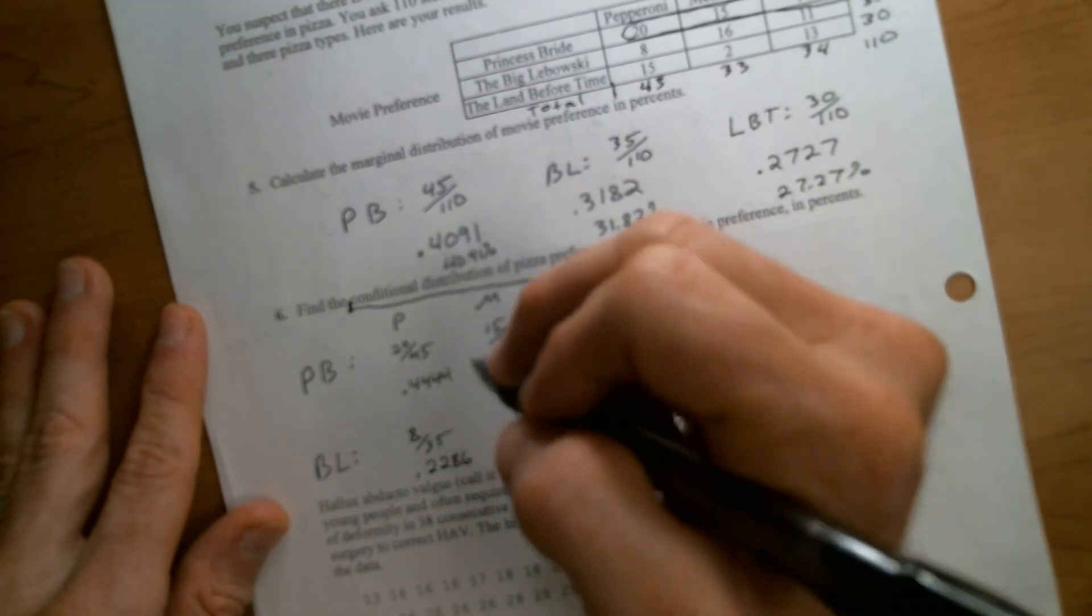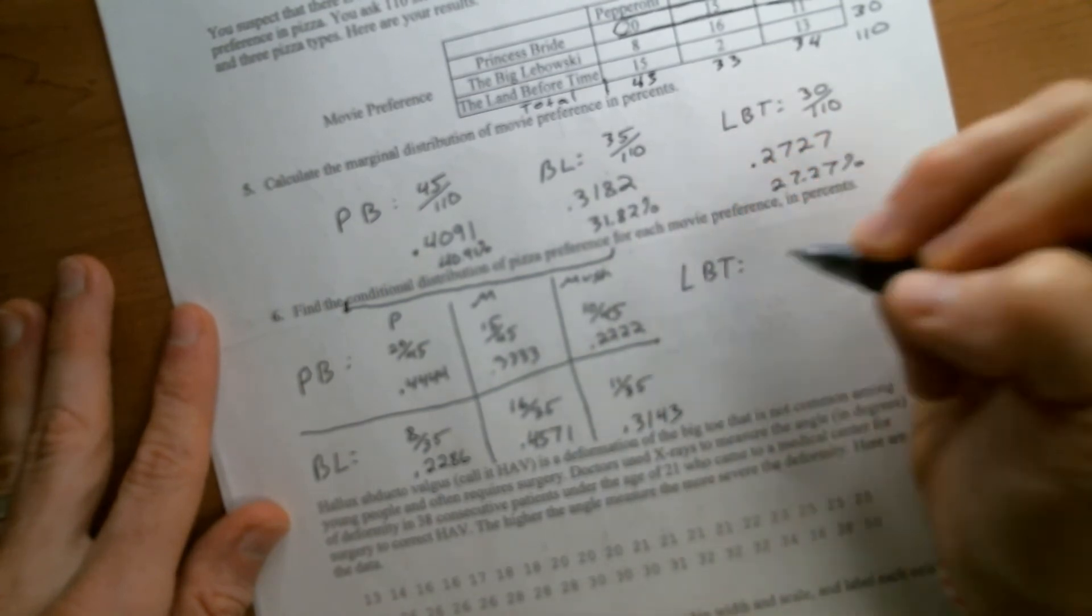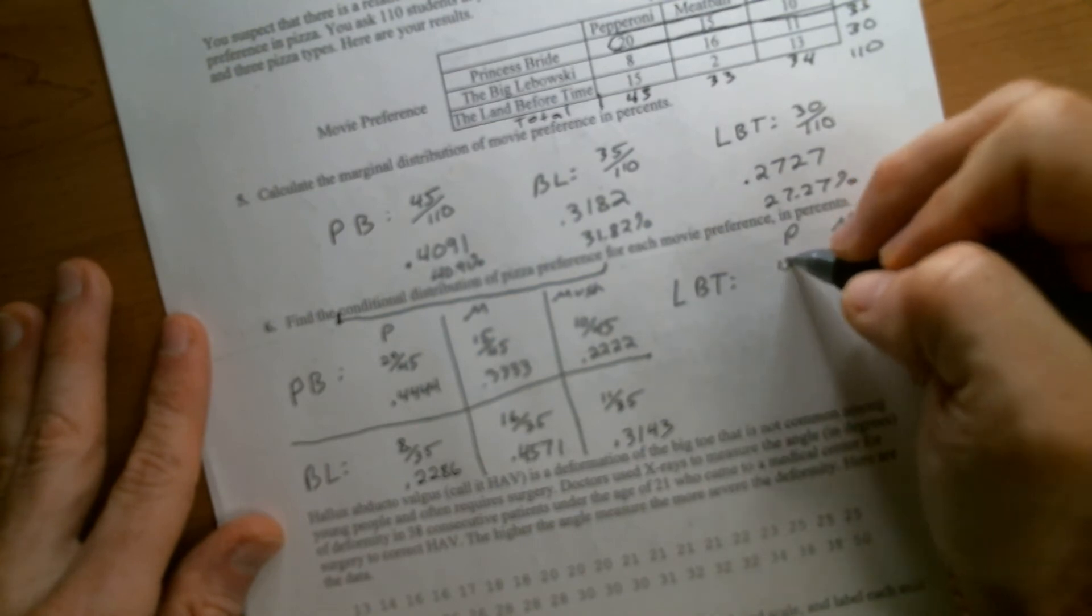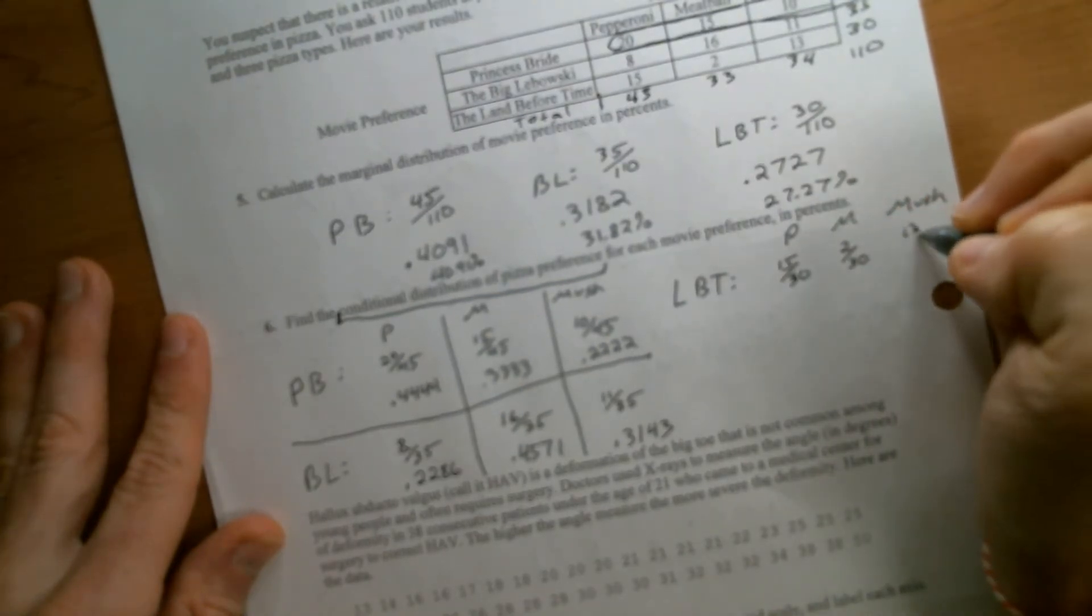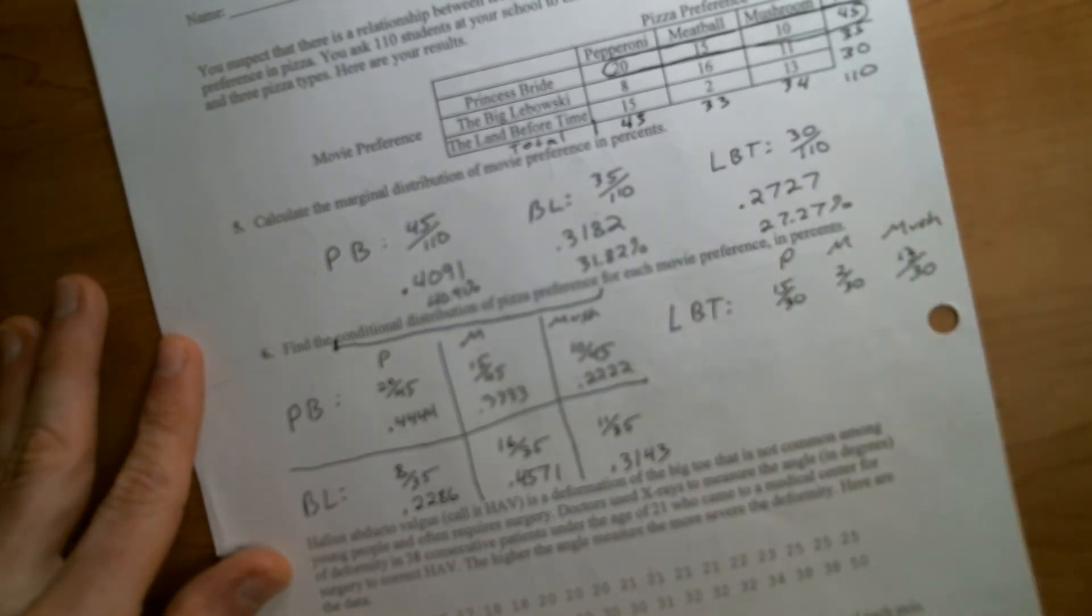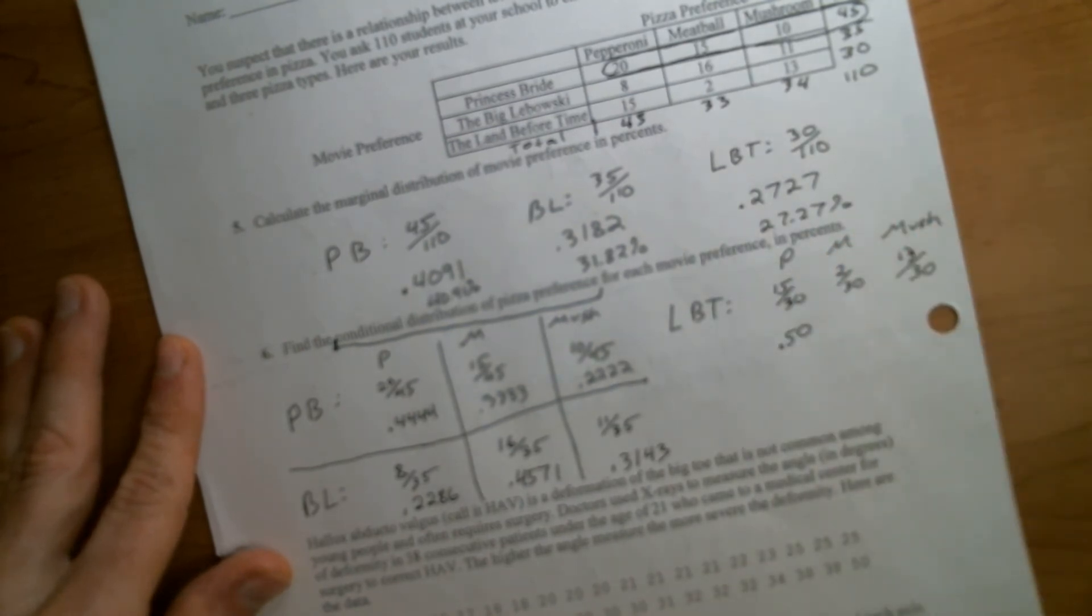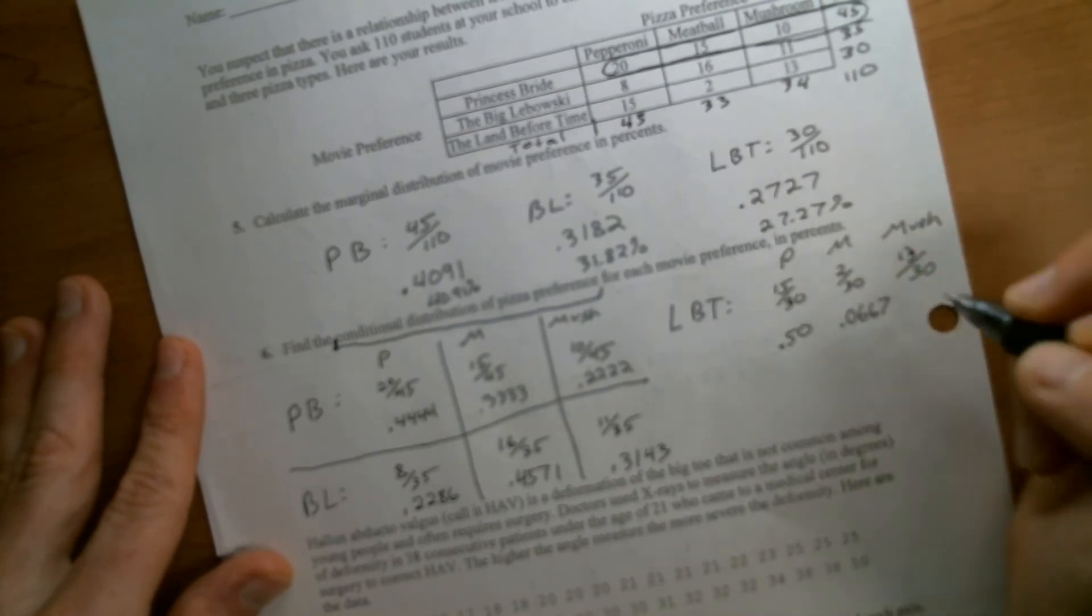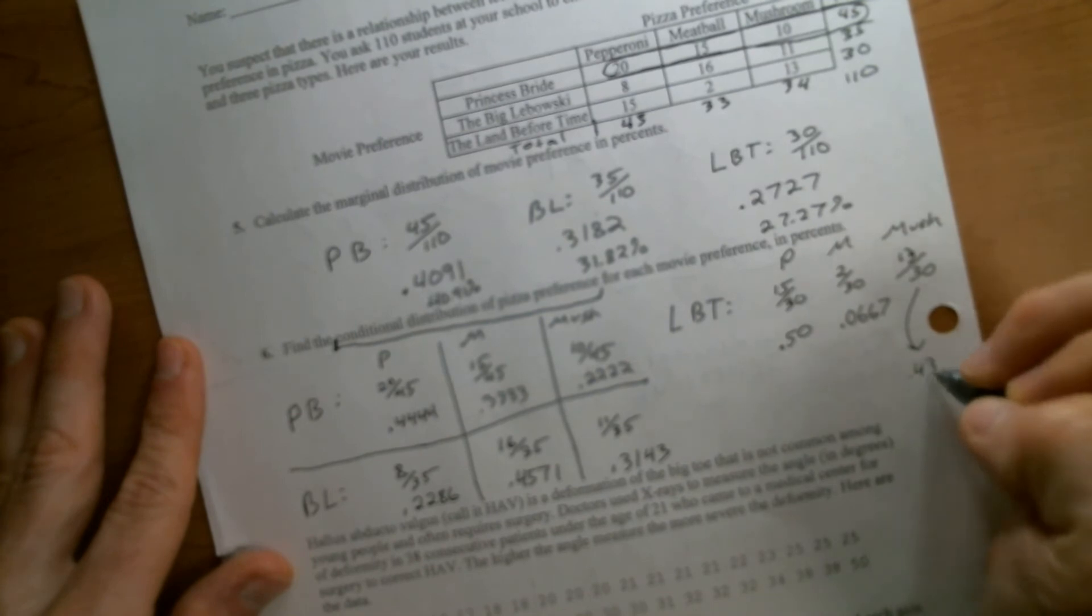And then last but not least, land before time. We need pepperoni, meatball, and mushroom again at the top. So land before time would have been 15 out of 30. So again, we're going across the row and using that row total for each of these different ones. So 15 out of 30, that one's obviously just going to be 0.50. 2 out of 30 is going to be 0.0667. And this last one, 13 out of 30, is going to be whatever's left over, which is 0.4333.